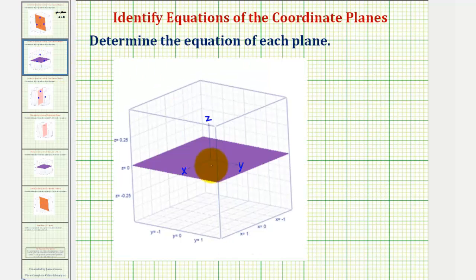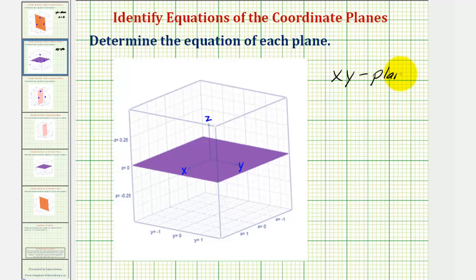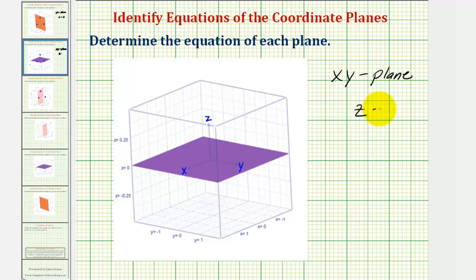Looking at our next example, notice how this plane contains both the x and y axes, and therefore we call this the xy-plane. Notice how for any point on this plane, the x and y coordinates can be any real number, but notice how the z coordinate must be zero, and therefore the equation of the xy-plane is z equals zero.